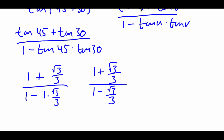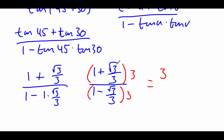Now the way this is written, I don't really like having these fractions inside of fractions. So on top and bottom, we're going to multiply everything by 3. On top, 3 times 1 is 3, and then if we take 3 times root 3 over 3, those 3s will cancel out and we'll just have that square root of 3 left over. On bottom, distributing the 3, we get 3 minus root 3.